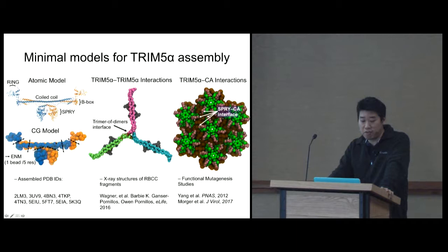We coarse-grained this atomic model at a resolution of about one bead for every five residues, and we added simple elastic network models at the dashed line shown here to confer some flexibility to the protein. We also parameterized an attractive interaction to form this trimer-of-dimers interface, which has been seen crystallographically in x-ray structures of fragments of the protein. And we also parameterized attractive interactions between the SPRY domain and residues on the capsid surface. These residues were, when they were mutated experimentally, either decreased or abolished TRIM5α binding, so we parameterized an attractive interaction between those residues and the SPRY domain.